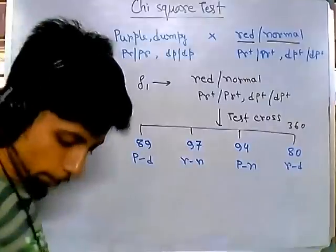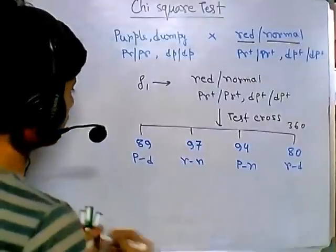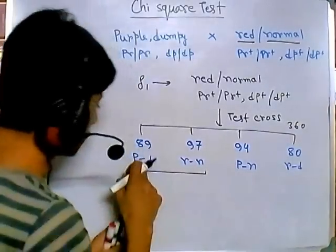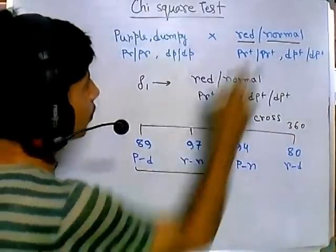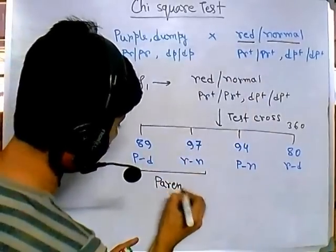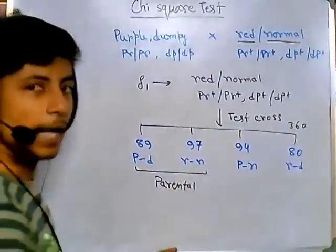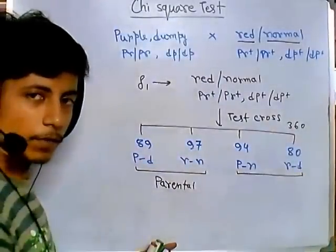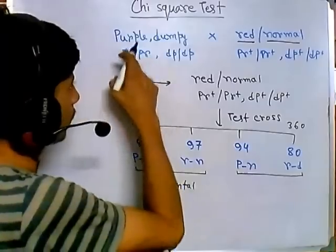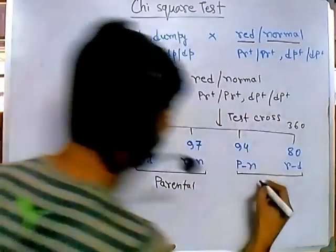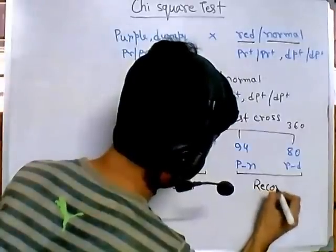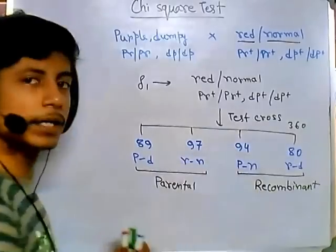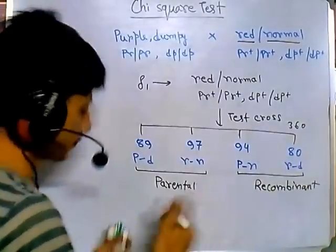Looking carefully, two of these phenotypes are exactly like the parents — purple dumpy and red normal — so they are parental in nature. The other two have completely different combinations of phenotypes from either parent, so they are termed recombinant type. That's the normal distinction we make here.